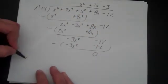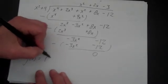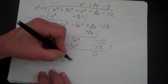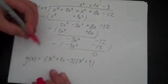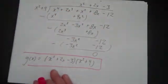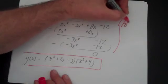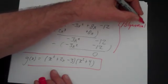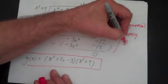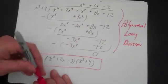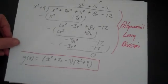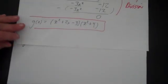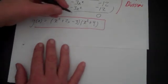So g(x) is going to equal (x² + 2x - 3)(x² + 4). I'm not done yet — I still need to factor. But I can factor the rest by hand. This is polynomial long division, and if you need to review that, there's a video called polynomial long division — there are actually two videos on it.